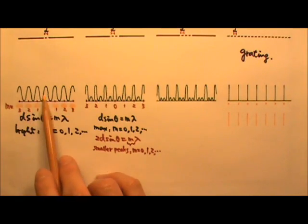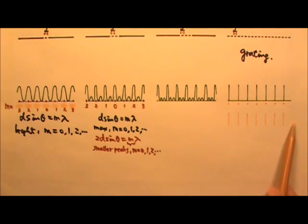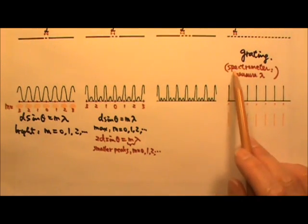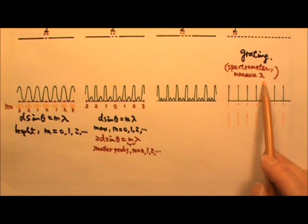Unlike these thick bright fringes that are hard for us to get very accurate theta or y measurements, the sharp lines produced by a grating can be measured much more precisely. So gratings are what we use in a spectrometer. A spectrometer is a device that is used to measure the wavelength of light.